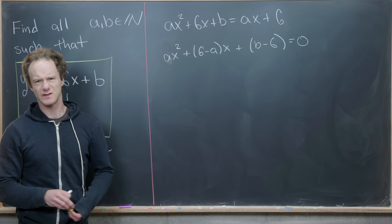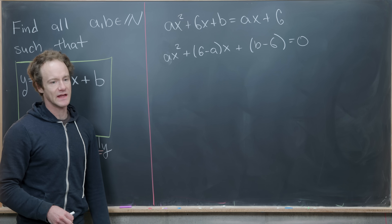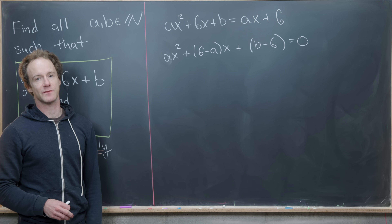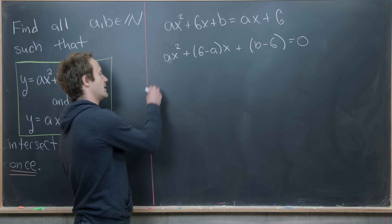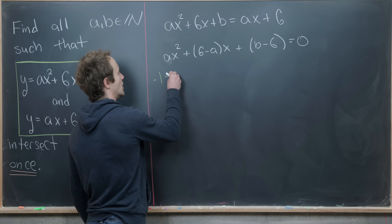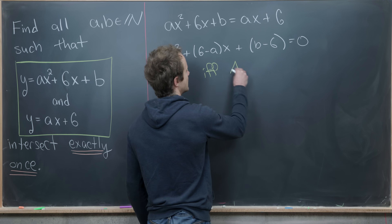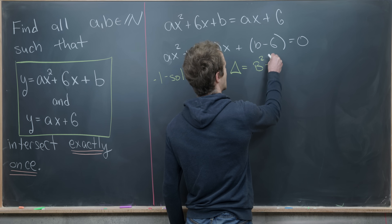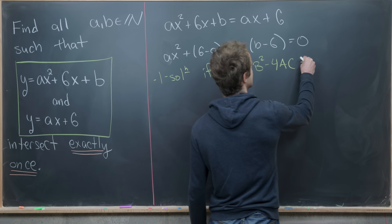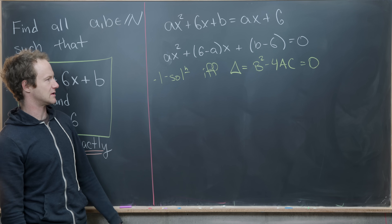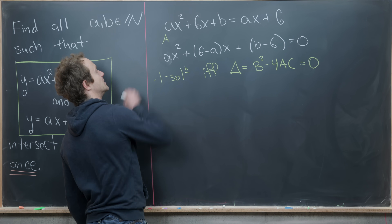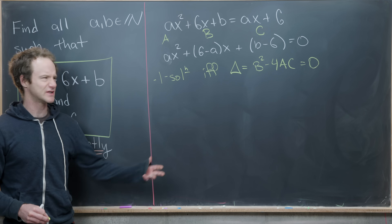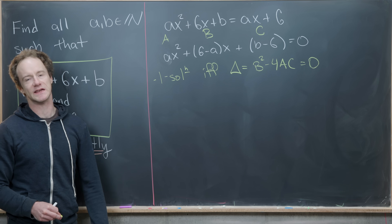We'll use the fact from algebra that a quadratic equation has exactly one solution if and only if the discriminant is equal to zero. The discriminant Δ = B² − 4AC = 0, where capital A, B, C are the coefficients of x², x, and the constant term — not to be confused with our lowercase a and b.